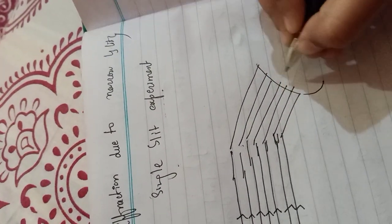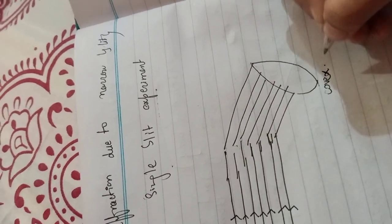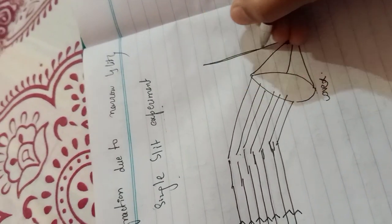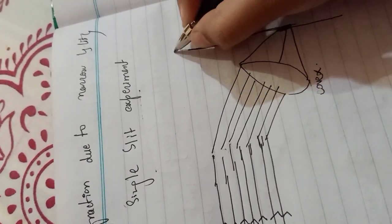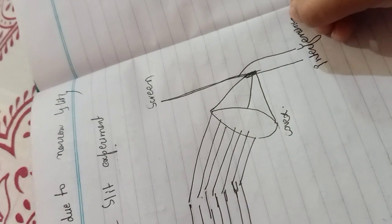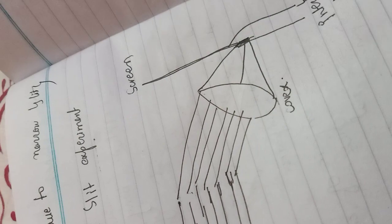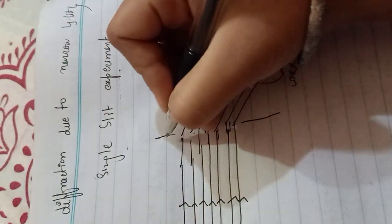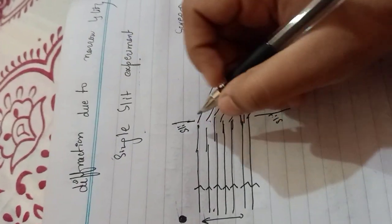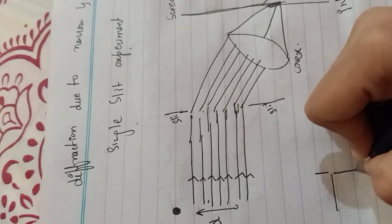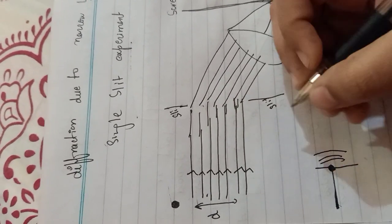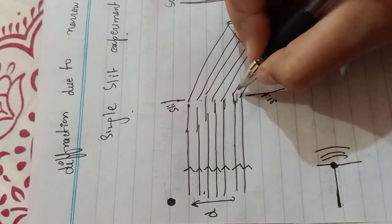To converge the light into a single point, we have used a convex lens, which is a converging lens. To see the interference pattern, we have put a screen. We have also put a slit, and as you all know, when the slit spacing equals the wavelength, diffraction will occur.